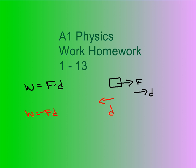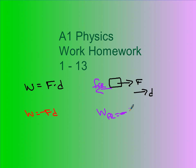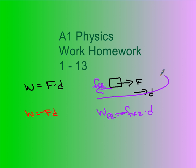A better example of this would be if we had friction. Friction is going to the left but our displacement is to the right. In that case, the work done by friction is going to be minus the force of friction times the displacement. If I wanted to find the total work done by the system, the total net work is going to be the work done by my applied force minus my work done by friction.